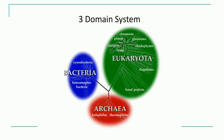The six-kingdom classification system was further modified into what is called the three-domain system. All six kingdoms were classified into three major domains. The first domain is Bacteria, which includes all the eubacteria or true bacteria. The second domain is Archaea, which includes all ancient bacteria. The third domain is Eukaryota — the largest domain — which includes all animals (kingdom Animalia), kingdom Plantae, all the Protista, and all the Fungi.